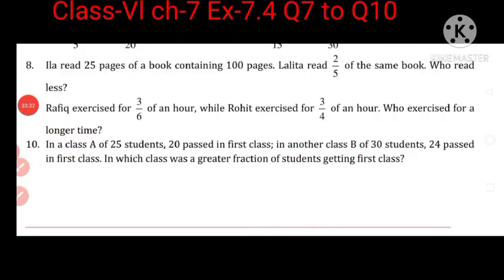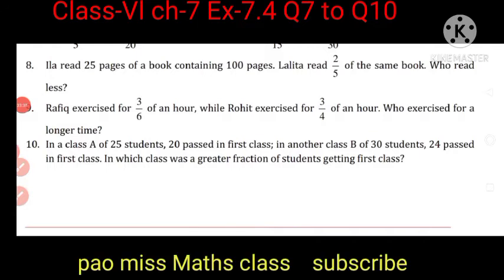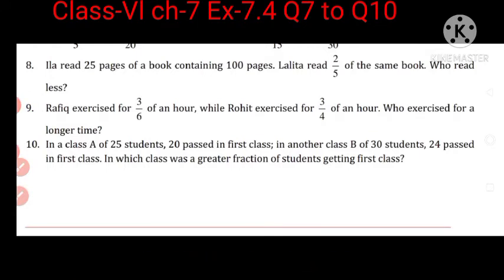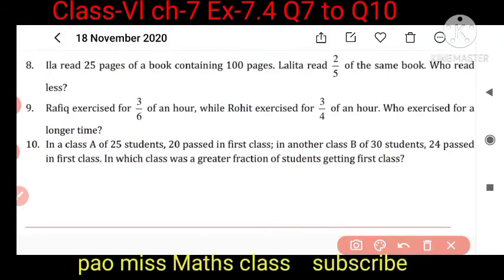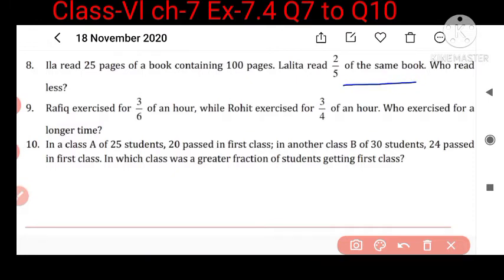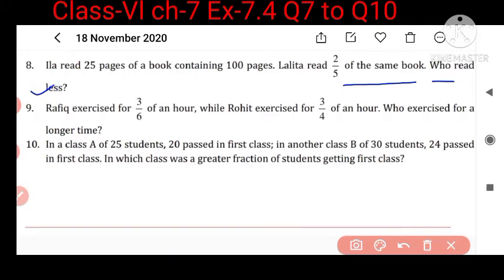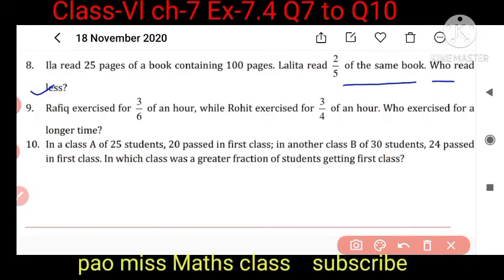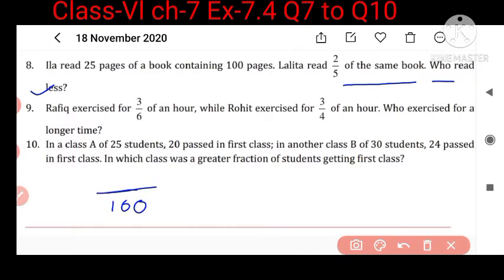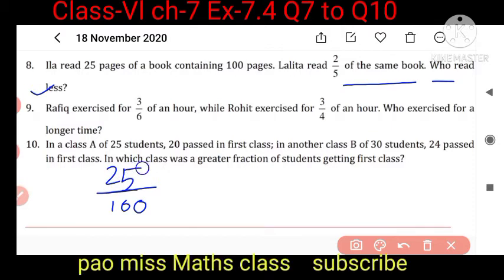Question 8: Ila read 25 pages of a book containing 100 pages. Lolita read 2 upon 5 of the same book. Who read less? We have to compare their fractions to find who read less.